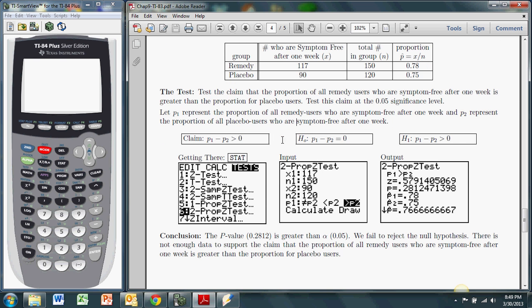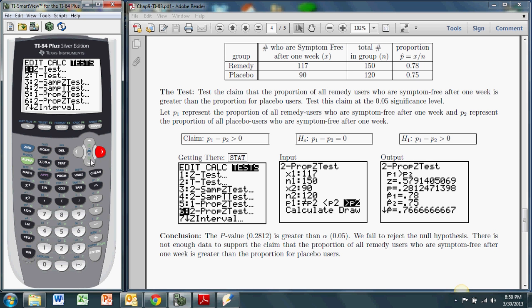What I'm basically saying is that the proportion from my first group is greater than the proportion from my second. So the difference, P1 minus P2, is greater than zero. To get started with the TI, I go over to stat, tests, and I scroll down to 2-prop z test. Again, that's for two proportions, and it's a z test. So I hit enter.